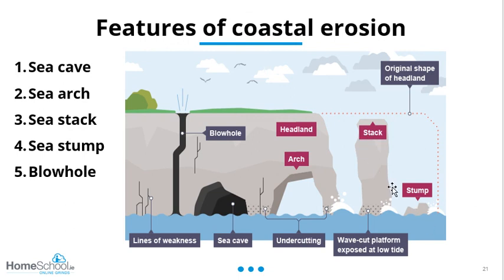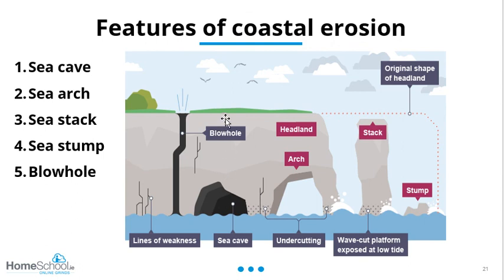Through constant erosion — like cutting down a tree — waves erode the bottom of the sea stack, making it weaker and weaker until it collapses, leaving behind a sea stump, much like a tree stump. A blowhole forms when lines of weakness in a sea cave extend upwards. As water keeps attacking the sea cave, it erodes these lines of weakness upward until eventually the erosion reaches the surface, forming a blowhole.